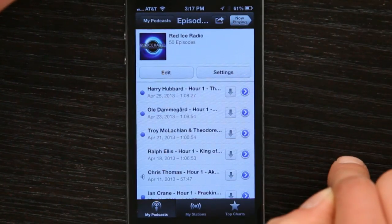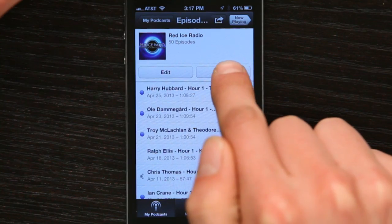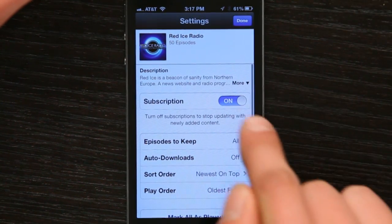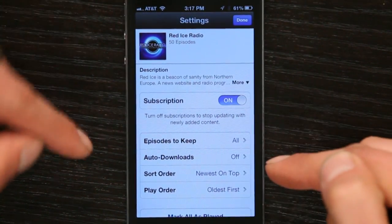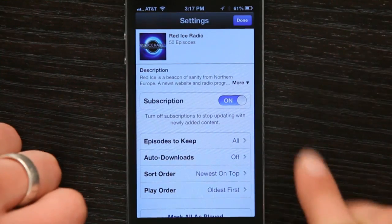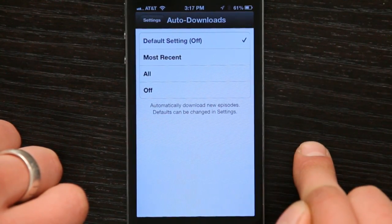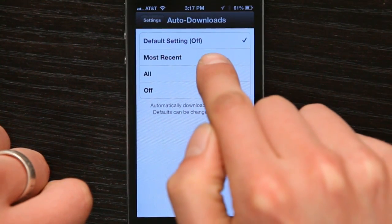I'm going to go to my favorite podcast and tap settings. I've got a subscription, but I don't have auto-downloads turned on. So if I tap that, and then tap most recent,